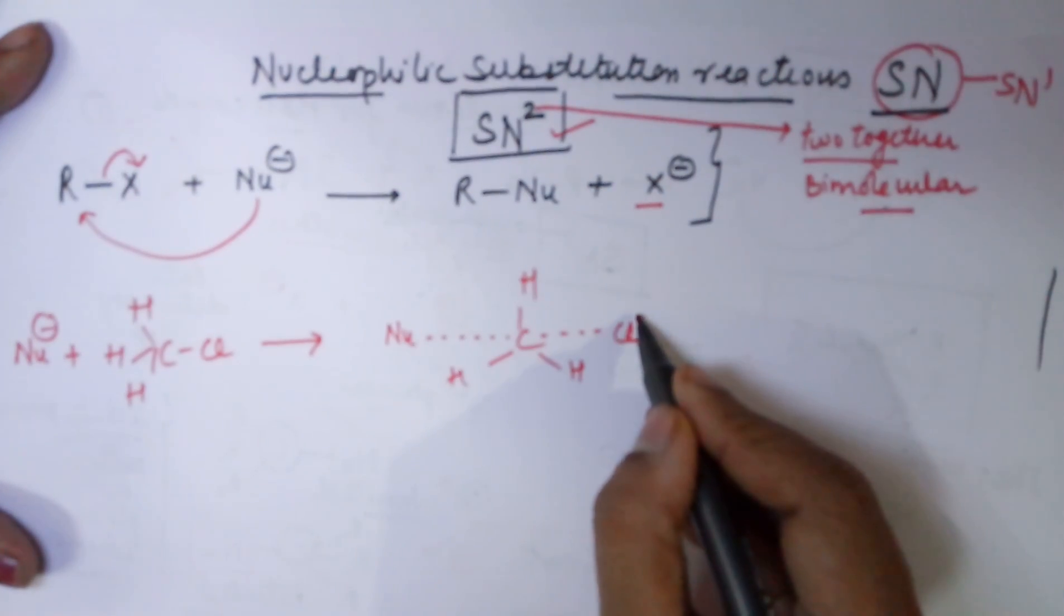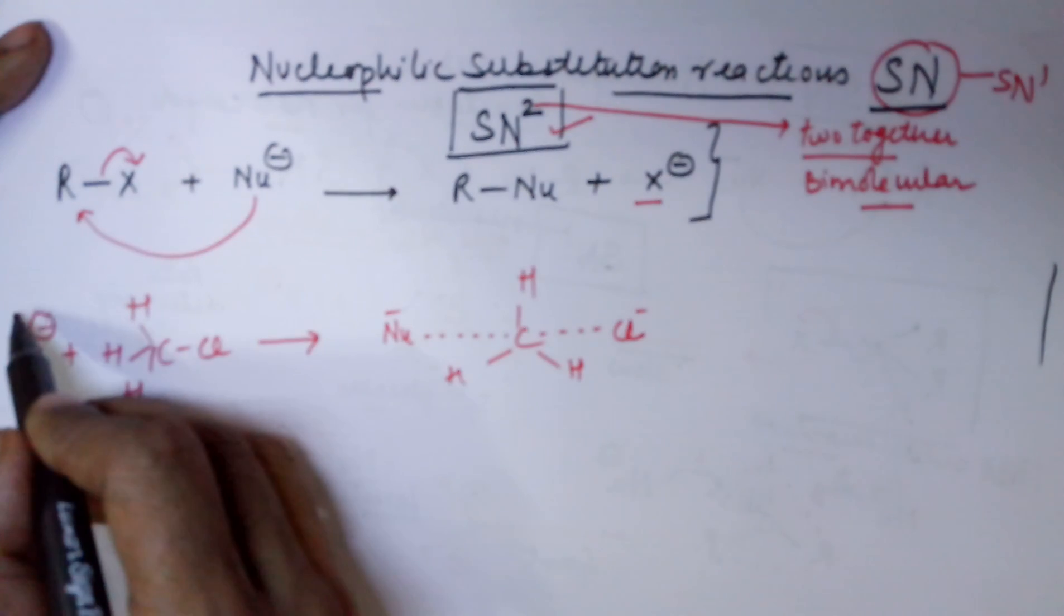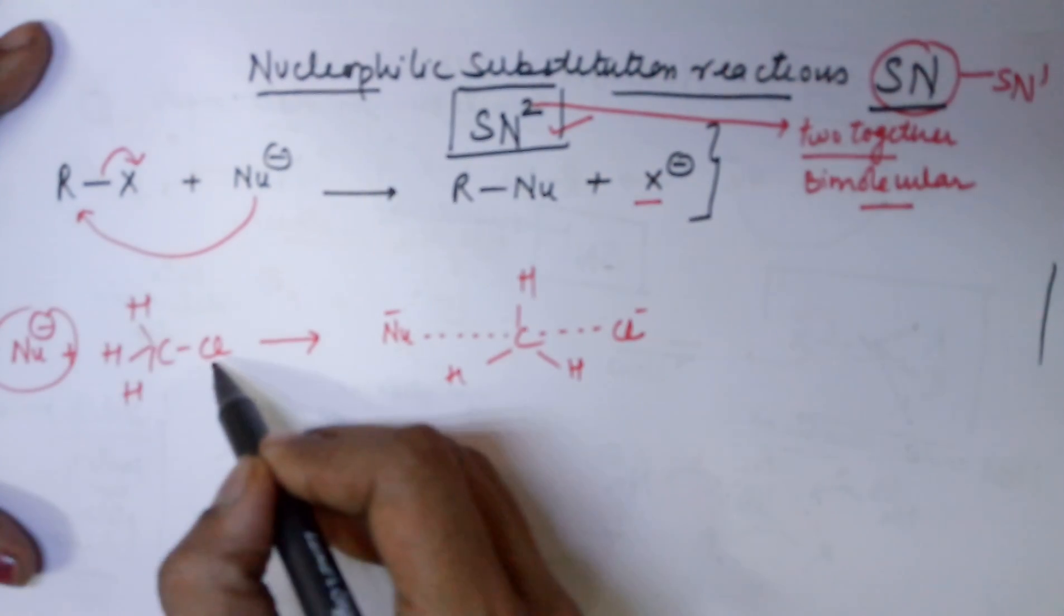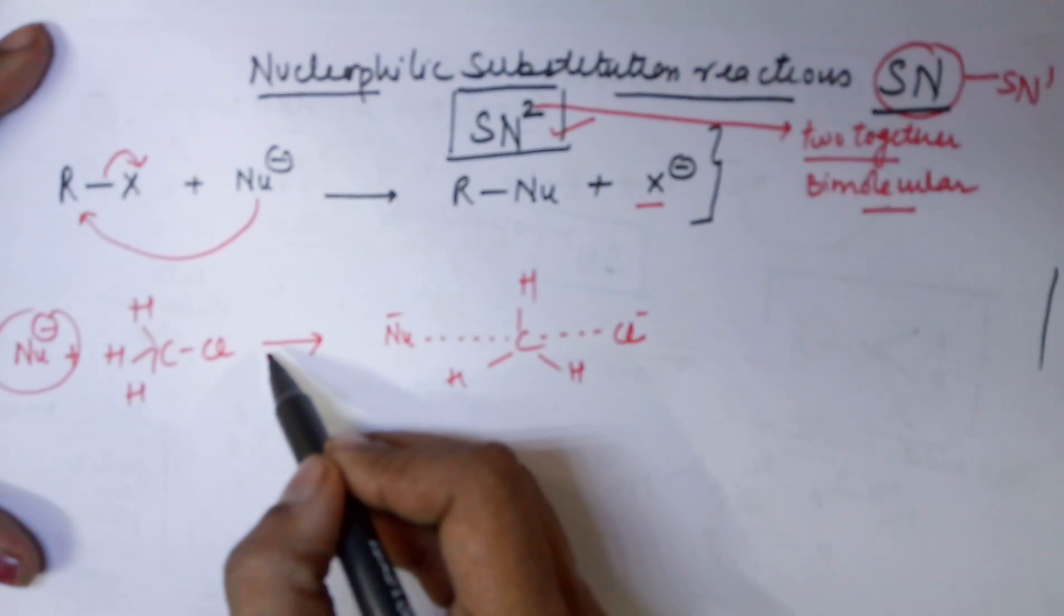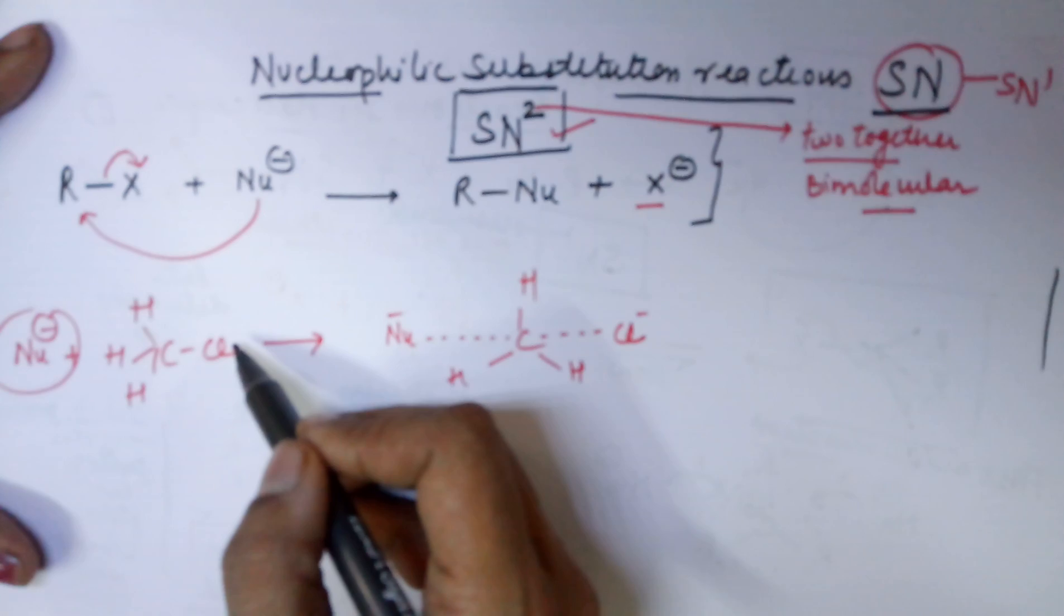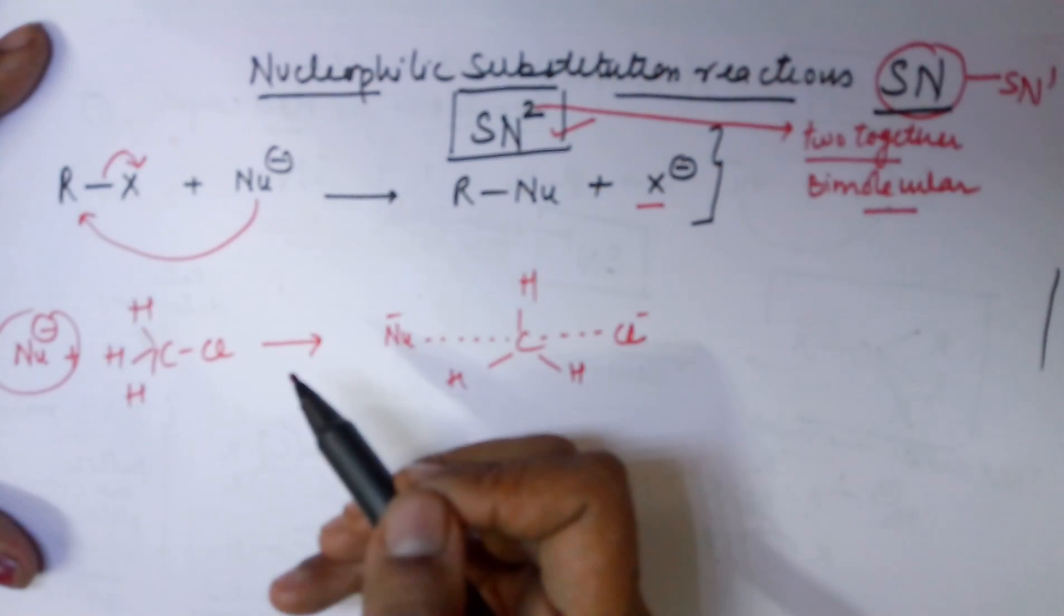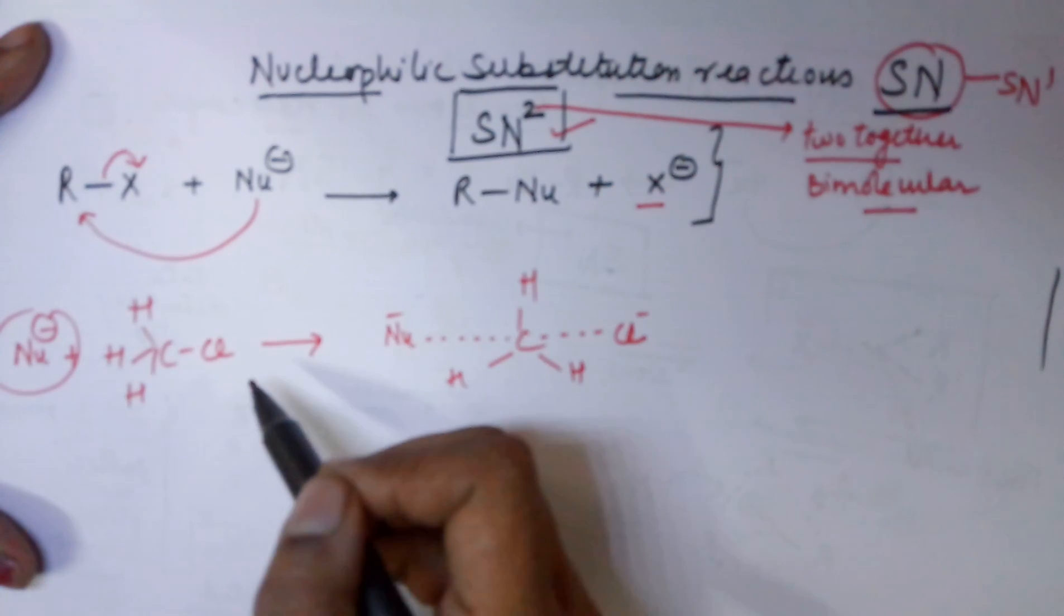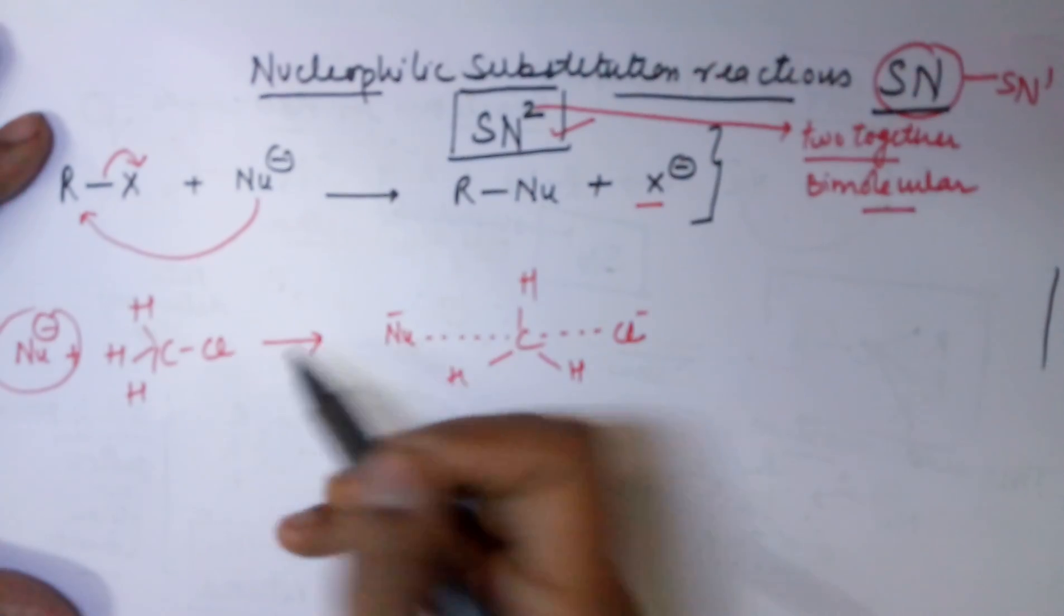Cl goes on leaving as a negative and nucleophile attacks as a negative. If your nucleophile attacks from the same side, there would be repulsion from the outgoing Cl- towards the incoming Nu-. These two negatively charged identities, the leaving nucleophile and the attacking nucleophile would repel each other. Therefore, nucleophile never attacks from the side the halide is leaving.